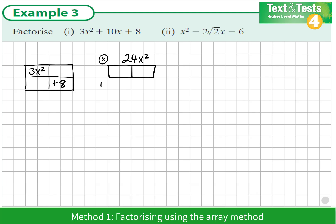So we're looking for factors of 24x². But we know that the missing diagonal must add up to 10x. So when we think about it we see that 6x and 4x multiply to be 24x² and add up to 10x.